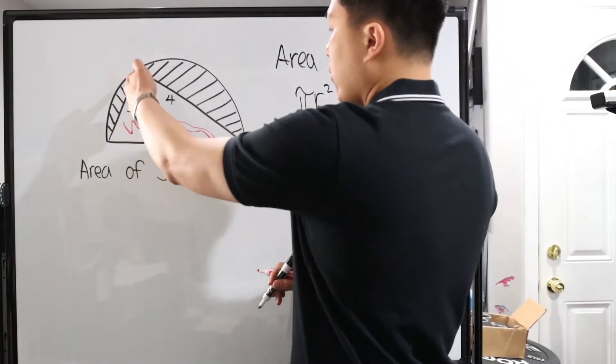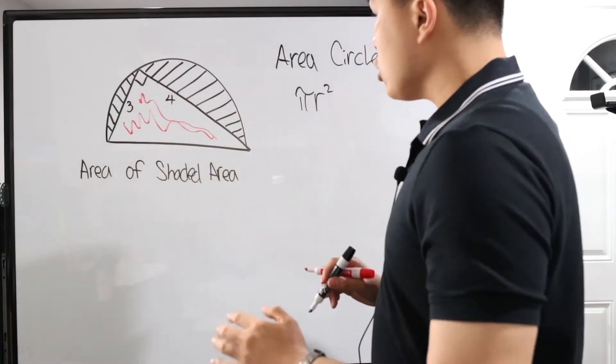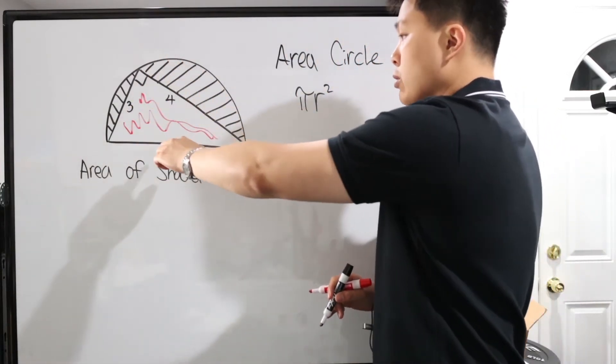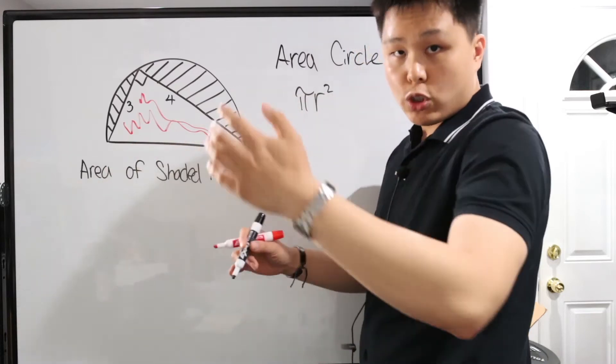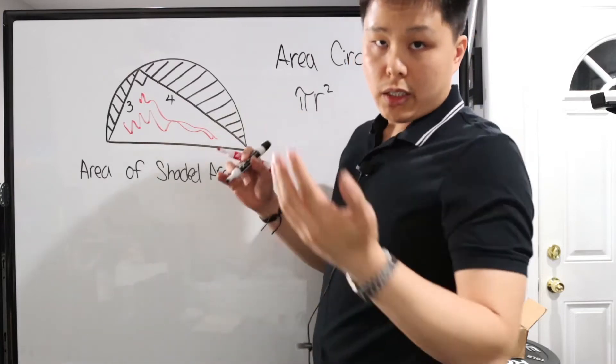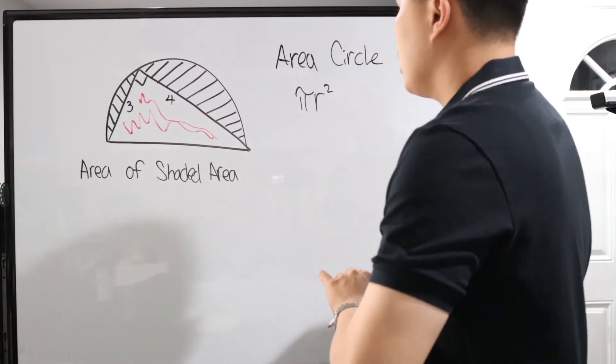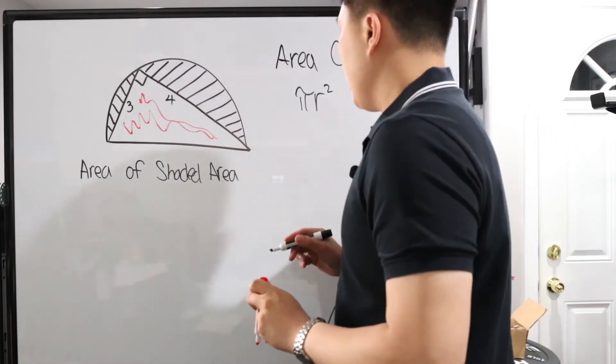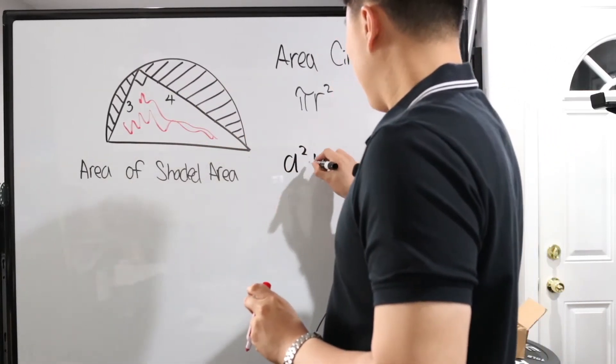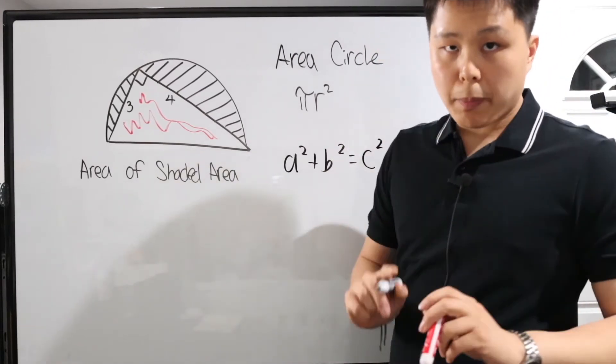Well, in this case, we have a triangle, we have a right triangle. So what we're going to do is use the Pythagorean theorem to find out what this length right here is. That's your hypotenuse. And it also will tell us what r is because guess what? It's a half circle, a semicircle. So this whole thing is a diameter. Half of it is r radius. a squared plus b squared equals c squared. That's the Pythagorean theorem.